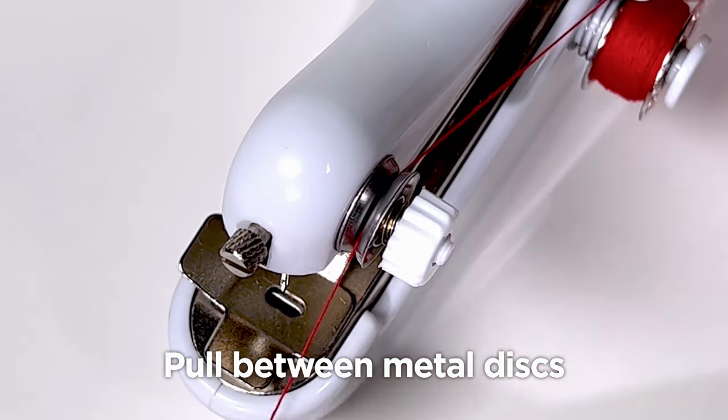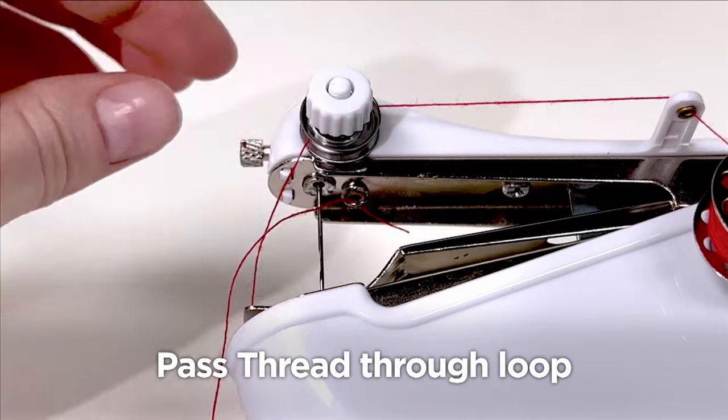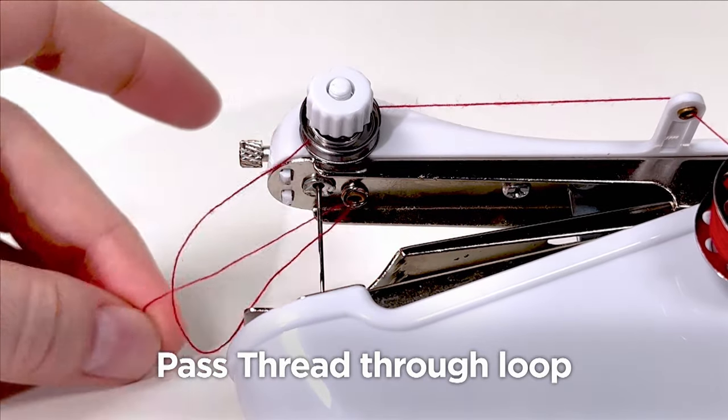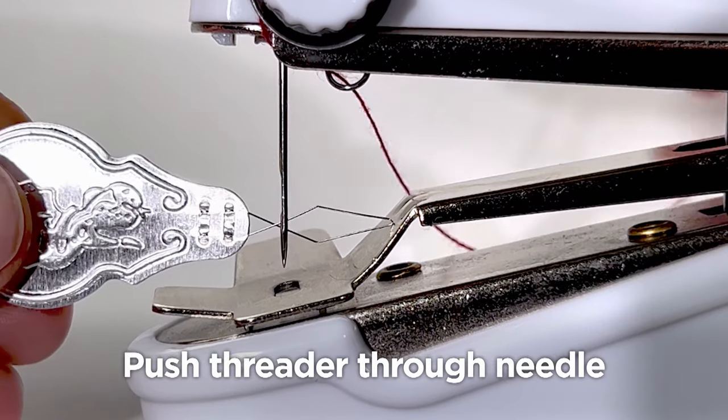Then place the thread between them so that it hangs down the front of the machine. On the underside of the product's arm is a small loop. You need to pass the thread through this and pull it all the way. Now you'll need to take your threader and squeeze it through the eye of the needle.